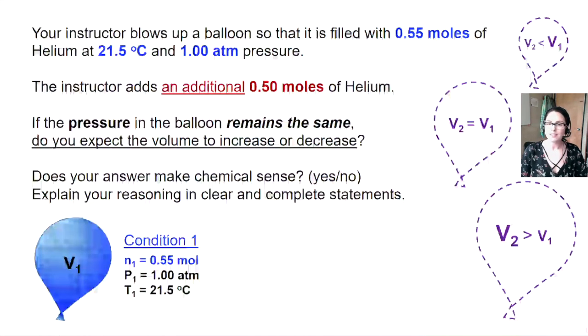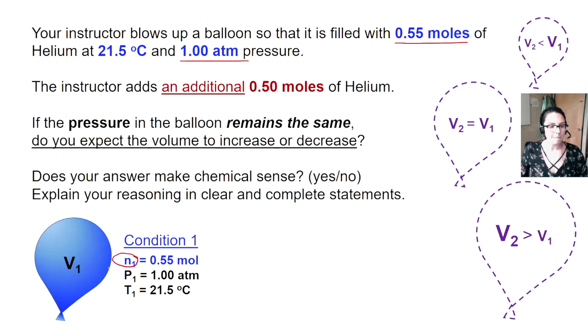Here, I've summarized all the information that the question gave us. Our initial amount of moles of helium is N1. Our pressure, P1, and our temperature, T1, is also assumed to stay the same. Can you figure out which variables are changing and which are constant? Give it a try.